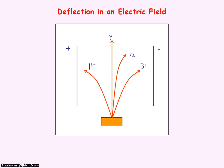And the gamma ray passed straight through the electric field. It wasn't deflected because the gamma ray has no charge.